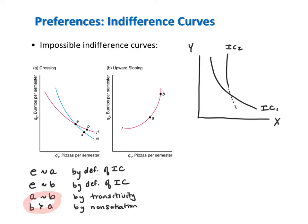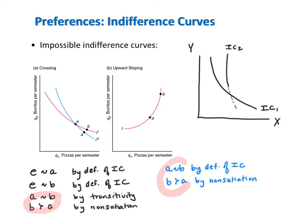Another impossible indifference curve, when we assume preferences are rational and monotonic, is an indifference curve that slopes up. By definition of an indifference curve, since A and B are on the same indifference curve, the consumer is indifferent between them. However, bundle B has more pizza and more burritos compared to bundle A, so by non-satiation, B should strictly be preferred to A. This is a contradiction — we can't simultaneously rank A as indifferent to B and B as strictly preferred to A. For that reason, indifference curves can't slope up.